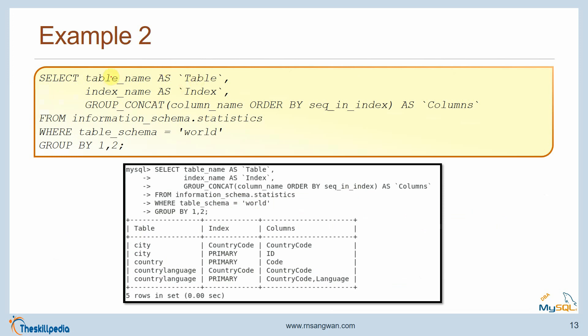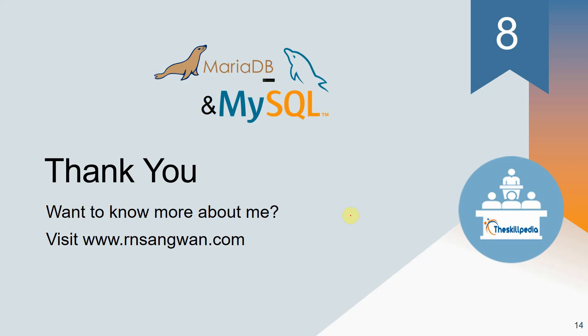Another example: SELECT table_name AS table, index_name AS index, GROUP_CONCAT(column_name ORDER BY seq_in_index) AS columns FROM information_schema.statistics WHERE table_schema = 'world' GROUP BY 1, 2 — this gives you tables, their indexes, and columns. This is a powerful method to generate meaningful output from information_schema. It is a very useful and easy topic once you know what tables are available in information_schema. That's all for Session 8, thank you very much.